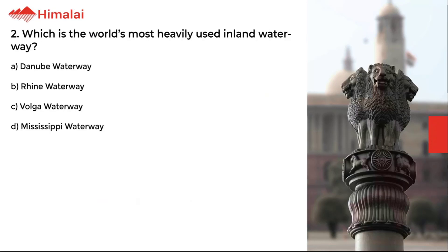Question number 2. Which is the world's most heavily used inland waterway? A. Danube waterway, B. Rhine waterway, C. Volga waterway, D. Mississippi waterway.